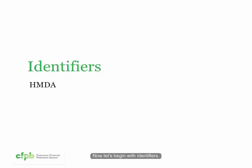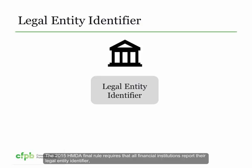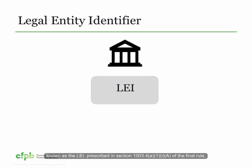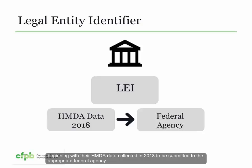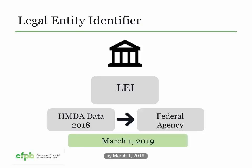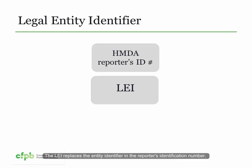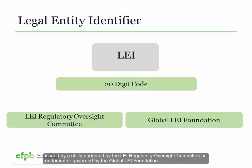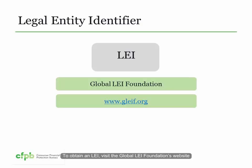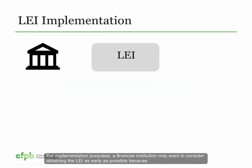Now let's begin with identifiers. The 2015 HMDA final rule requires that all financial institutions report their legal entity identifier, known as the LEI, prescribed in section 1003.4(a)(1)(i)(A) of the final rule, beginning with their HMDA data collected in 2018 to be submitted to the appropriate federal agency by March 1, 2019. The LEI replaces the entity identifier in the reporter's identification number.